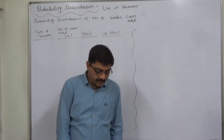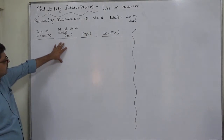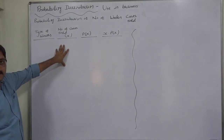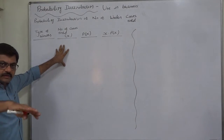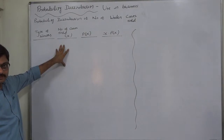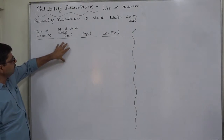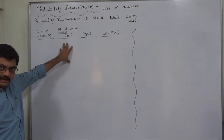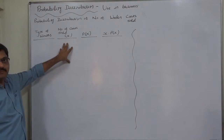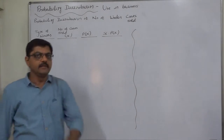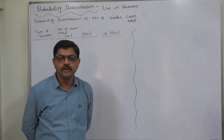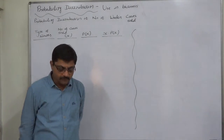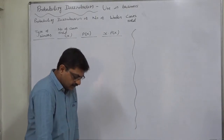When working with a probability distribution, the random variable X is always the quantity for which we need to calculate the expected value. Here we need to calculate the expected number of coats, so we take the random variable X as the number of coats sold. There is no direct information about the probability of number of coats, but we can use the information about the type of winter for this purpose.